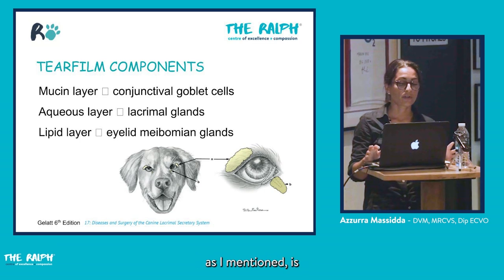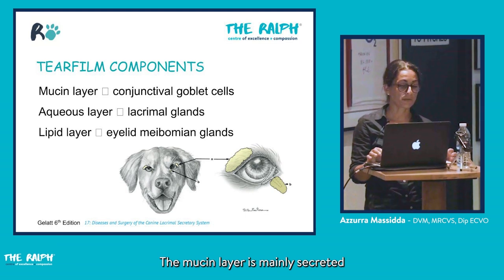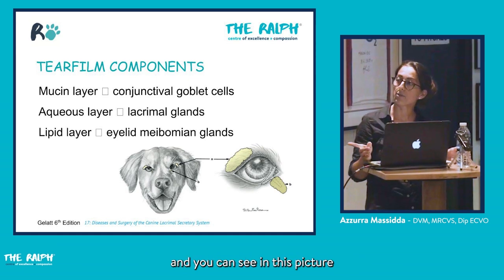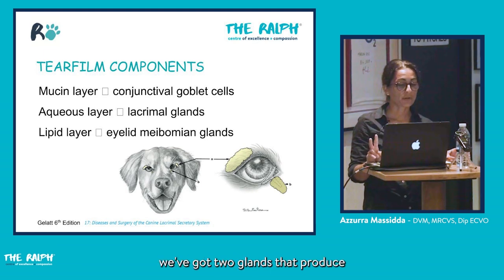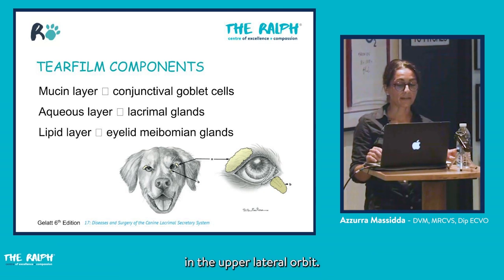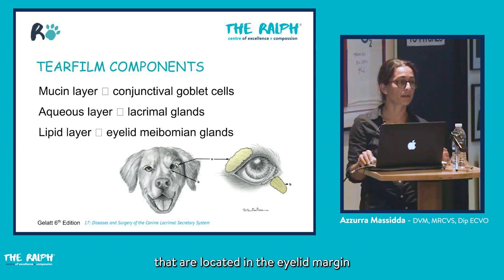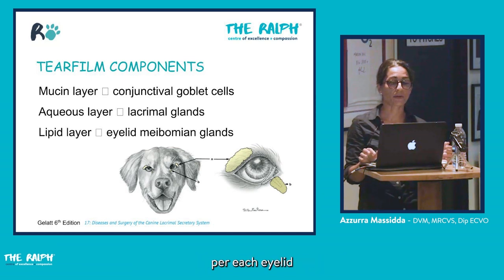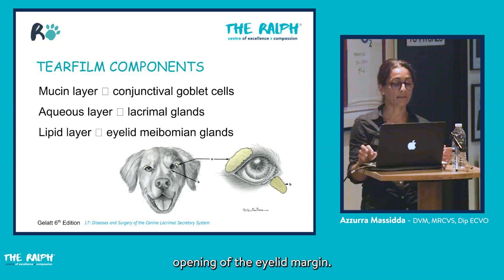Each layer is secreted by a different gland. The mucin layer is mainly secreted by the conjunctival goblet cells, and the aqueous layer by the lacrimal glands — there are two glands producing the aqueous layer, the main one being the orbital gland located in the upper lateral area. The lipid layer is produced by the meibomian glands located in the eyelid margin, approximately 30 to 40 glands per eyelid.